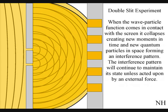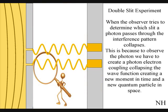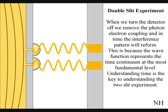When the observer turns on a detector to determine which slit a photon passes through, the interference pattern will collapse. This is because to observe the photon, we have to create a photon-electron coupling, collapsing each wave-front into a new quantum particle that will have its own position in space and time. If we turn the detector off, we remove the photon-electron coupling, and in time, the interference pattern will reform.